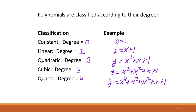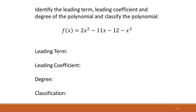Let's look at some examples and label the leading term, leading coefficient, degree, and classification. Remember, your leading term is the one with the highest power — not necessarily the one in front. So here the leading term is negative x cubed. That means our leading coefficient is negative one, the degree is three, and the classification is cubic.